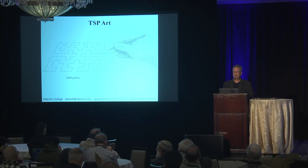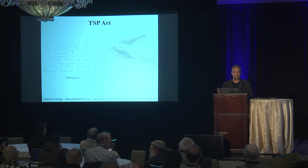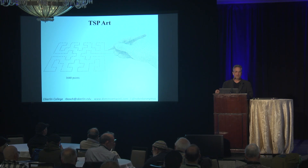In TSP art, you start with some recognizable image and then apply a stippling algorithm to lay down a bunch of points that collectively resemble that image. The next step is to think of these points as locations that a delivery driver must visit. Based in one of the locations, they must visit each of the others once and only once and return back to where they started, traveling the shortest possible distance — making a loop through all these points. This is an instance of the traveling salesperson problem, hence the name TSP art.